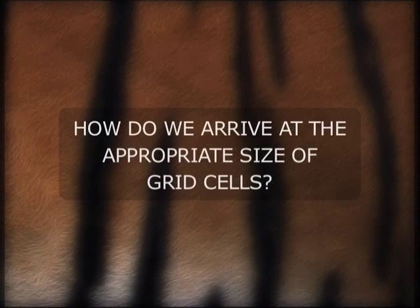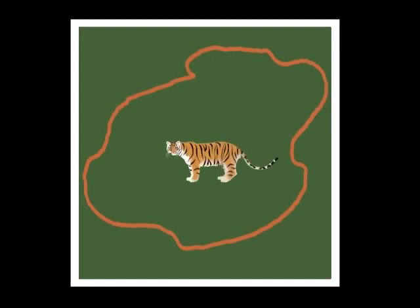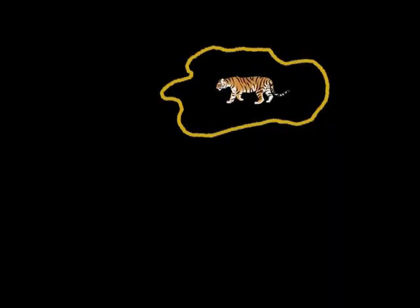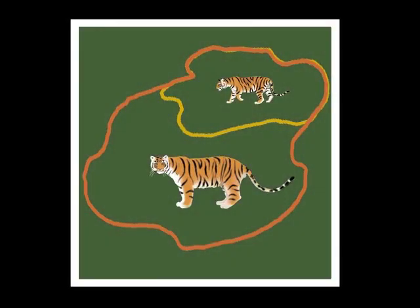But how do we arrive at the appropriate size of grid cells? Why use a 200 square kilometer cell in the case of tigers in Karnataka? For occupancy surveys, the size of each cell should be greater than the largest possible home range of the animal being surveyed. In Karnataka forests, the average home range of a female tiger is about 50 square kilometers. The home range of an adult male tiger is typically three times larger. Therefore, tiger occupancy surveys in this landscape should use a cell size of about 200 square kilometers.